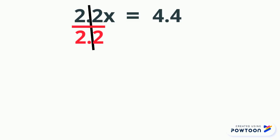Next example: 2.2x = 4.4. Whenever we have a number touching a variable like this, we know that multiplication is happening. So we must divide to solve this equation. We divide by 2.2 on both sides.